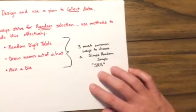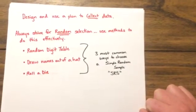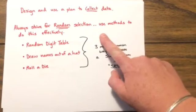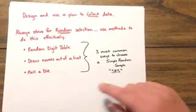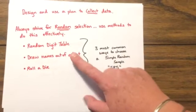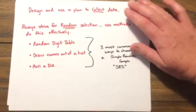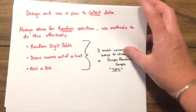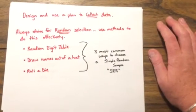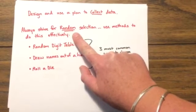The second phase is to design and use a plan to collect data. Always strive for random selection using methods to do this effectively. The three most basic methods to choose a simple random sample — we call that an SRS in stats — are: use a random digit table, draw names out of a hat, or roll a die. We'll talk about a few more methods in another video. You do not want to just choose people because it takes away the randomness, and that's very important with stats.